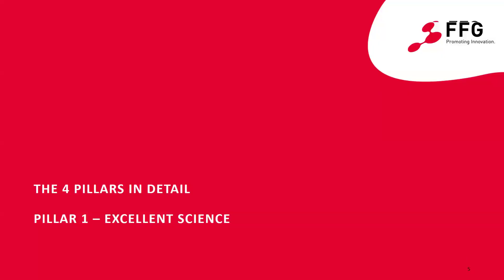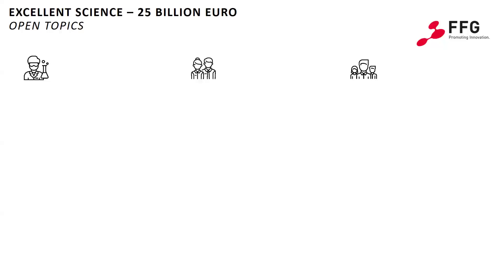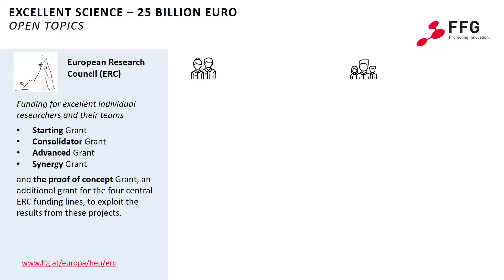Now a quick overview of the individual pillars. We start with pillar one, Excellent Science, with the main objective of strengthening and expanding the excellence of the scientific base. There is a total budget of 25 billion euros. The majority of the programs are thematically open — bottom-up — but not all. The thematically open European Research Council, or ERC, supports outstanding researchers at all stages of their careers, so that they and their teams can conduct groundbreaking research projects at the frontiers of knowledge. The sole evaluation criterion is scientific excellence. The highly competitive program includes four central funding lines, which differ depending on how long after the doctorate you can apply and in their funding amount.